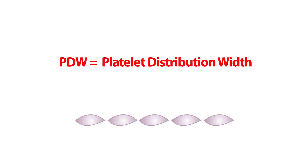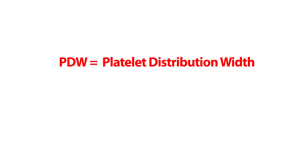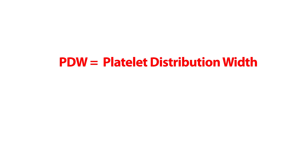Platelet distribution width, or PDW, is a measurement of how similar the platelets are in size. A high PDW means there is a great variation in size. The normal level of platelet distribution width is about 10 to 18%.